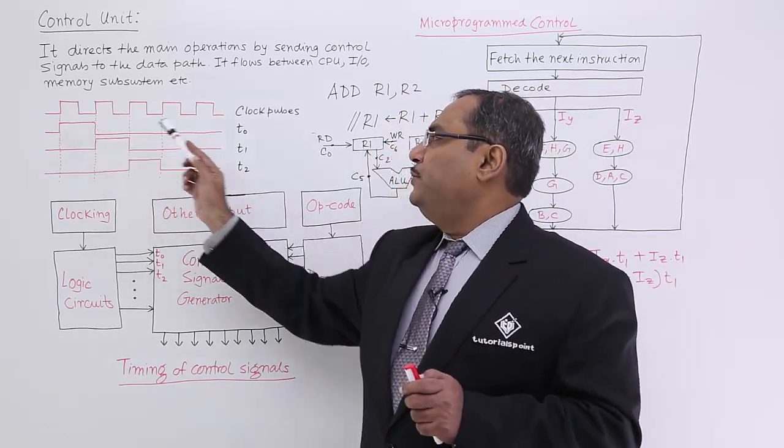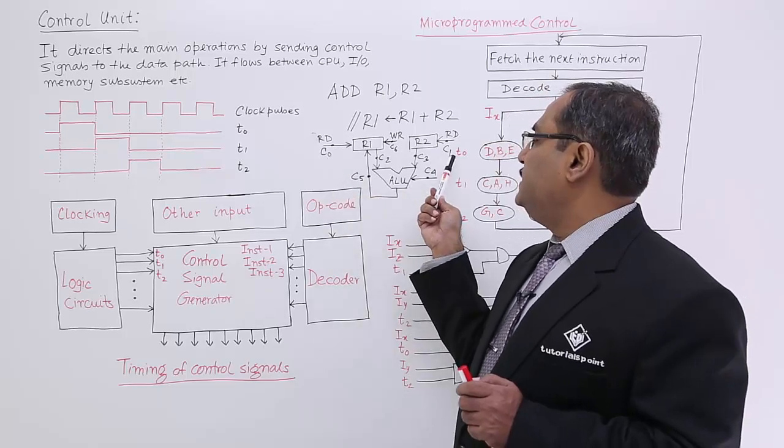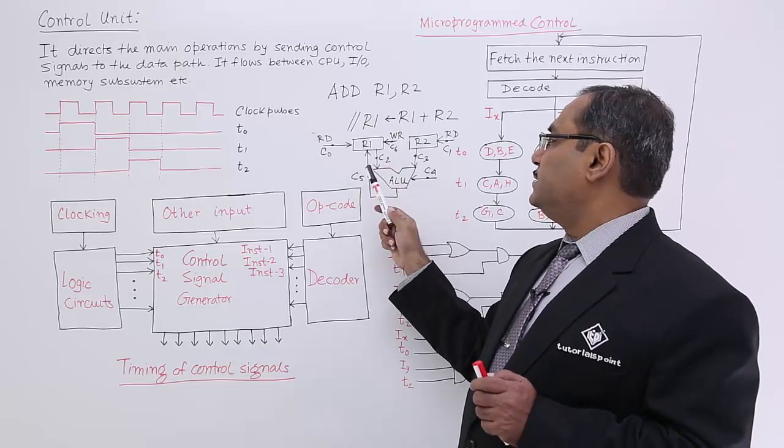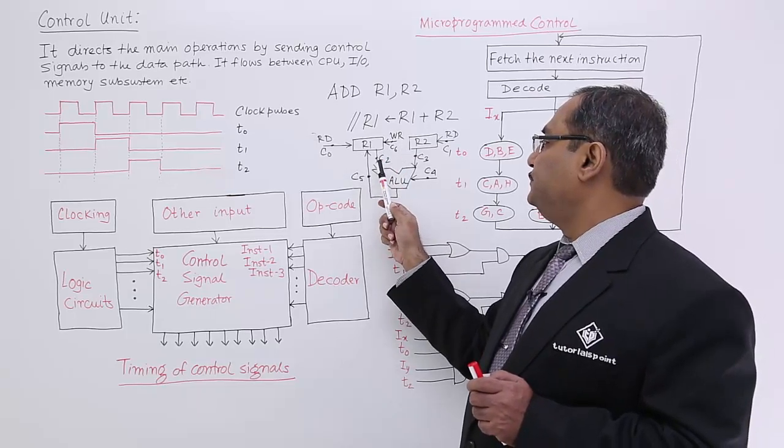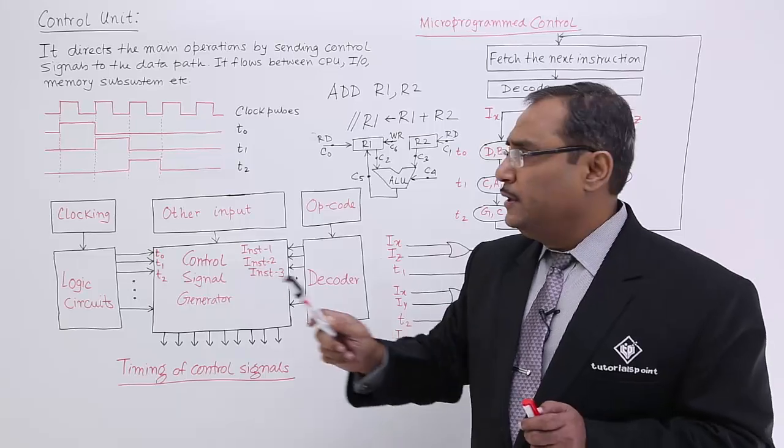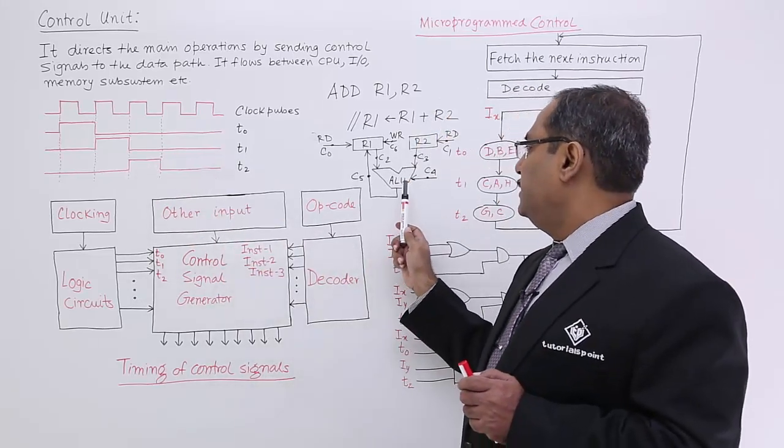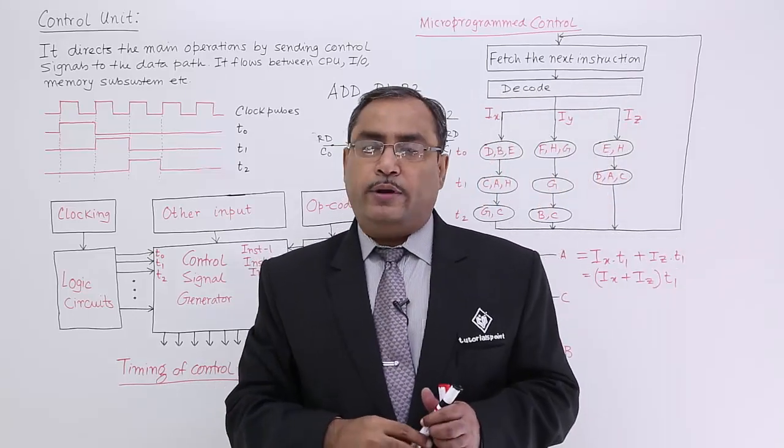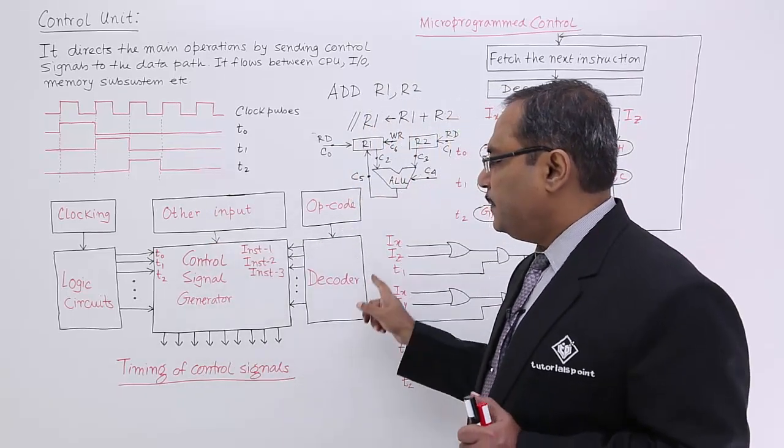For the first time period the C0 and C1 should be enabled. In the second time cycle then I should make this C2 and C3 enabled. Then in the third cycle this C4 will be enabled. This listing will be done accordingly so it has been depicted in this particular diagram.